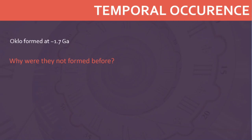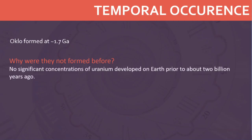Why did reactors develop in uranium deposits only about 1.7 billion years ago, when uranium-235 had already been depleted to less than 4% of the total uranium? Wouldn't fission reactors have been more likely to develop earlier in Earth's history when uranium-235 levels were even higher? Remember that a high isotopic abundance of uranium-235 is just one of the four conditions required for a natural reactor to develop. Another important condition is that uranium must be concentrated. It turns out that no significant concentrations of uranium developed on Earth prior to about 2 billion years ago. The reason for this is simple: it's oxygen.